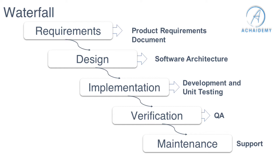With Waterfall, you get a stable, fully tested, and working software product, but there's every chance it may not be what the market needed, because you spent three to six months on the process and a lot can change in that time. Each phase has its own dedicated team with specialized skills — requirements experts, architects — who complete their phase and hand off to the next. The drawback of Waterfall led to the rise of Agile and Scrum processes.